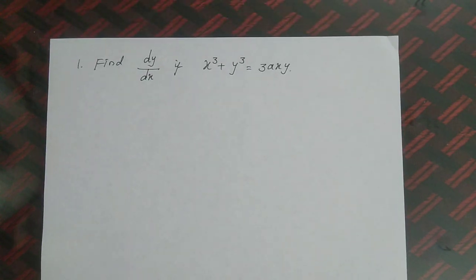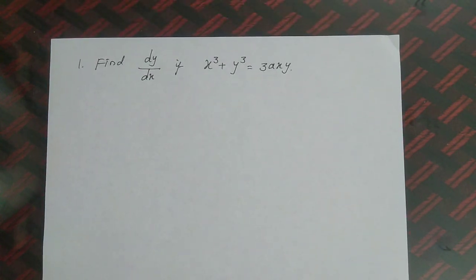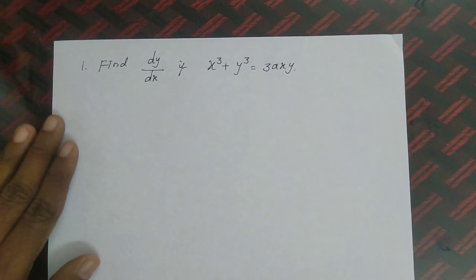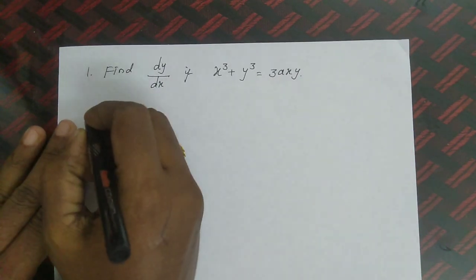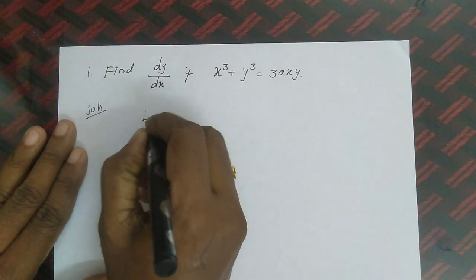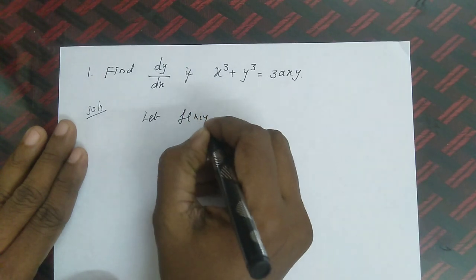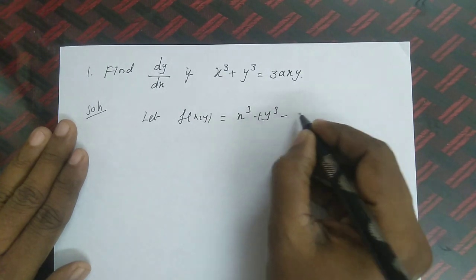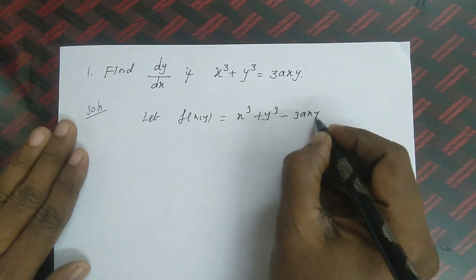First question: Find dy/dx if x³ + y³ = 3axy. The formula is dy/dx = -(∂f/∂x) / (∂f/∂y). For the solution, let f(x, y) = x³ + y³ - 3axy = 0.